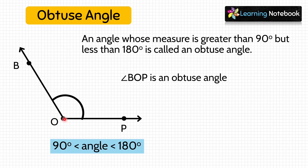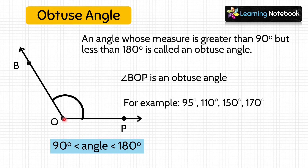Some other examples of obtuse angles are 95 degrees, 110 degrees, 150 degrees, and 170 degrees. All these are examples of obtuse angles.